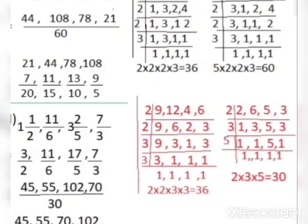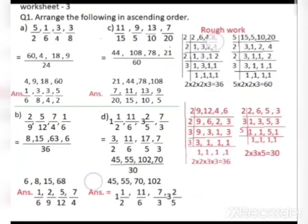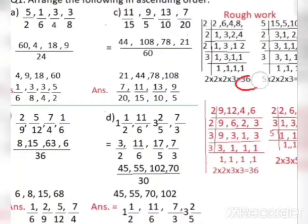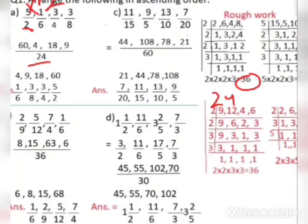Now we have found LCM = 24. We will convert all fractions to have denominator 24. To convert 5/2: multiply denominator 2 by 12 to get 24, so multiply numerator 5 by 12 also: 5×12 = 60. So 5/2 becomes 60/24. You can write each one separately: for 5 upon 2, multiply both by 12.